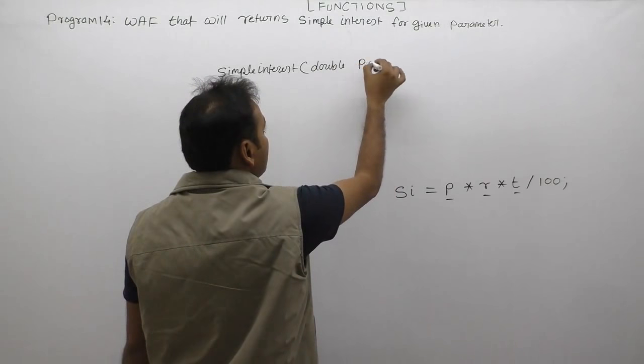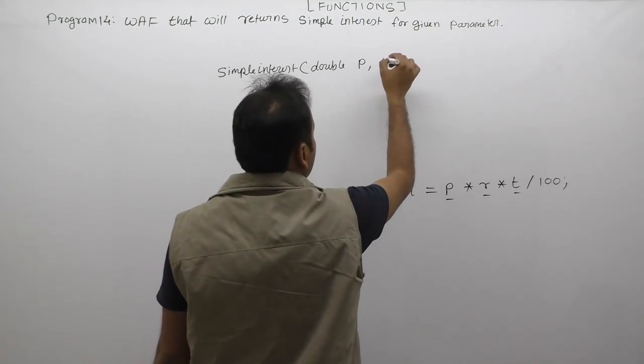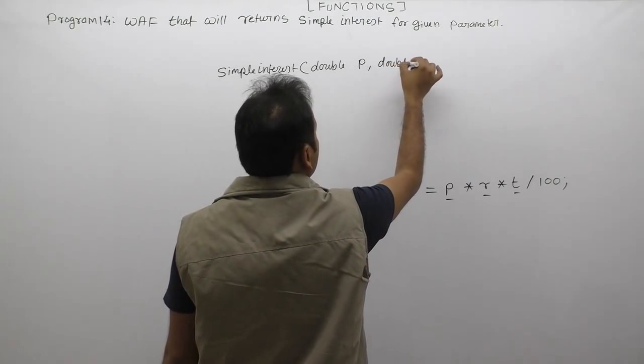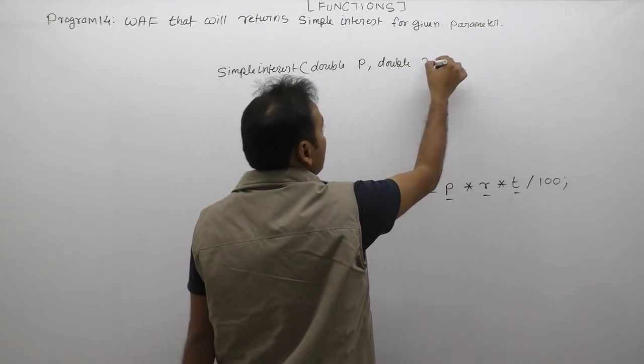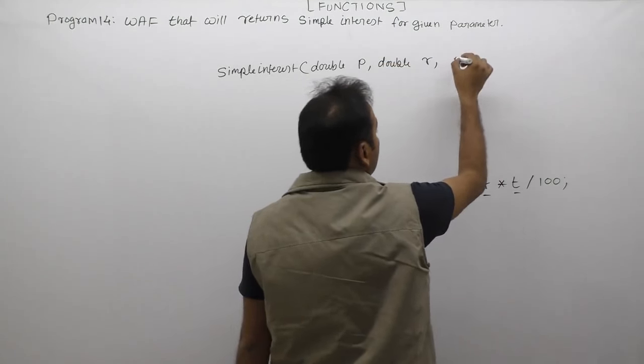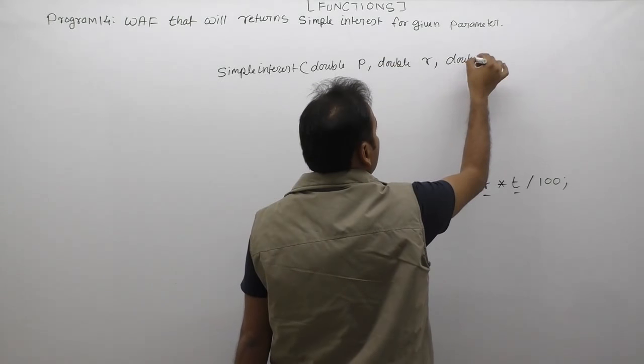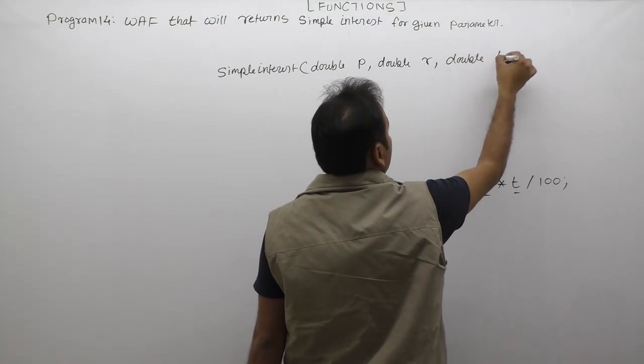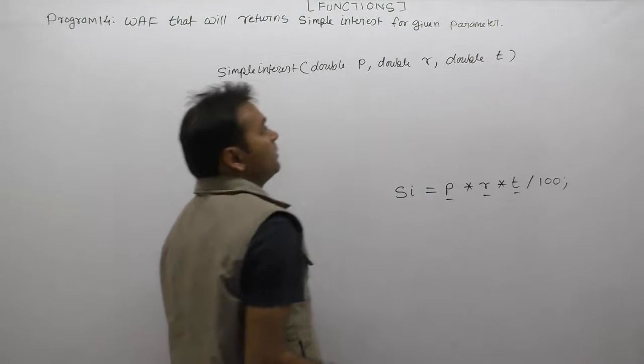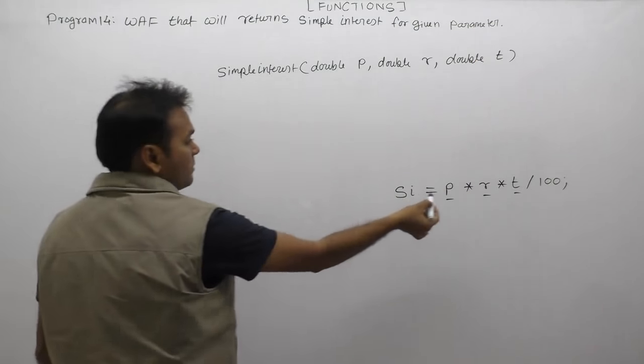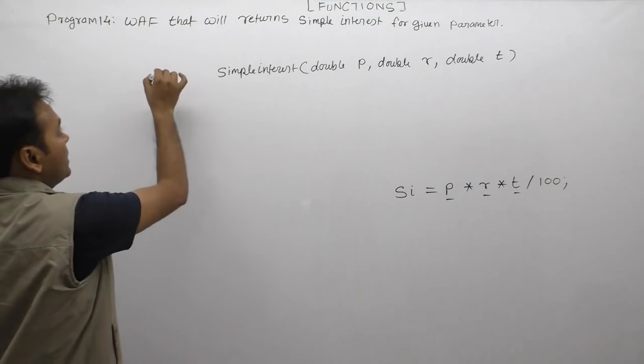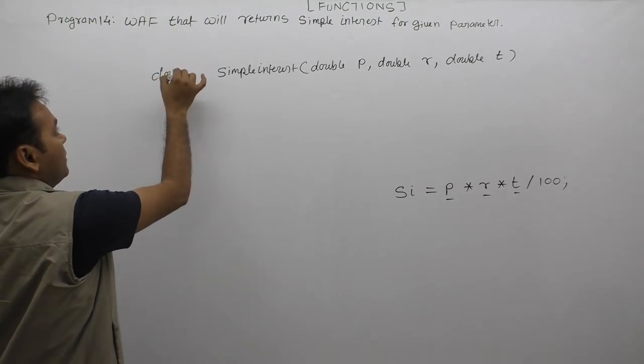Double principle, rate also double type, double or you can take as float or rate of interest, double time or duration. This is the second time of calculation. Calculation is coming also in the form of double.